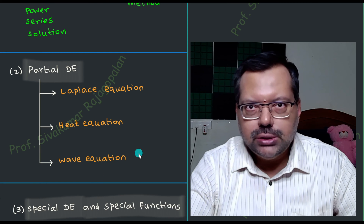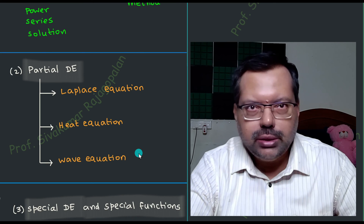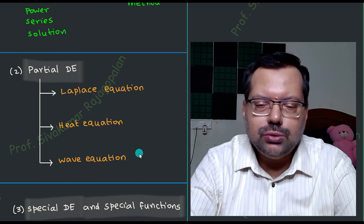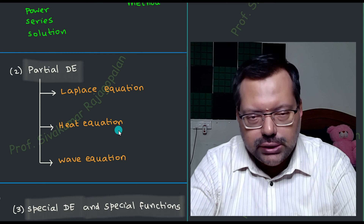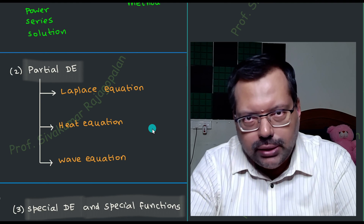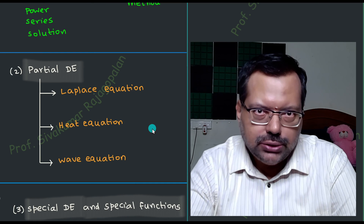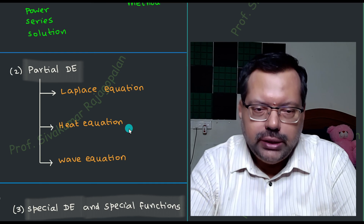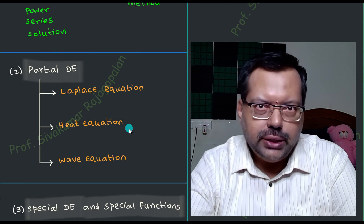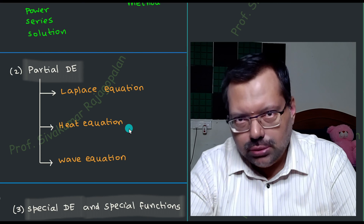These equations appear in classical mechanics, classical electrodynamics, or quantum mechanics — any topic in physics. Why do we learn only these three equations? Because we need the solution methodology as and when we move on to appropriate topics in electrodynamics, quantum mechanics, waves and oscillation, or similar courses.